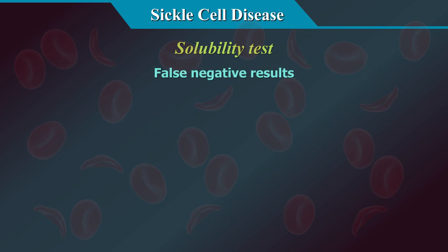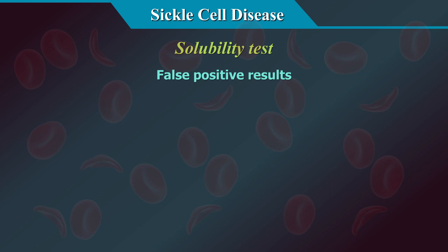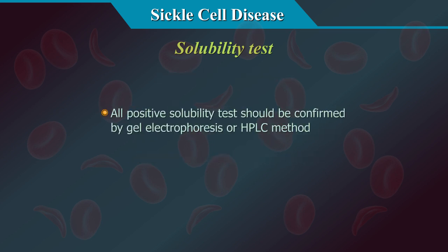False negative results can be seen with blood with low haemoglobin levels, and in infants less than 6 months of age with sickle cell disease when HbS levels are less than 20%. False positive results can be seen in severe leukocytosis, hyperproteinaemia (e.g. multiple myeloma), and in the presence of unstable haemoglobin variants. All positive sickle test cases should be confirmed by gel electrophoresis or HPLC.